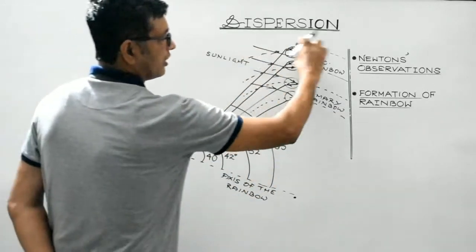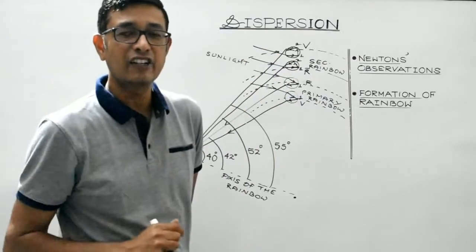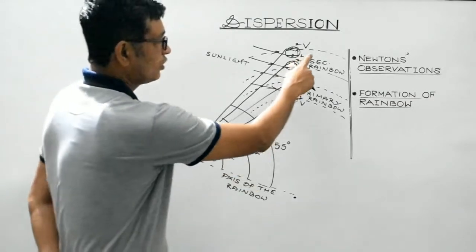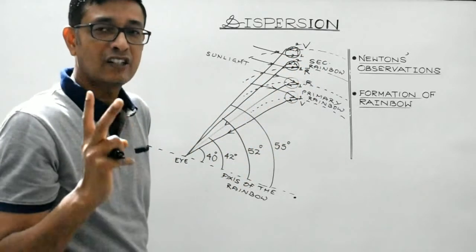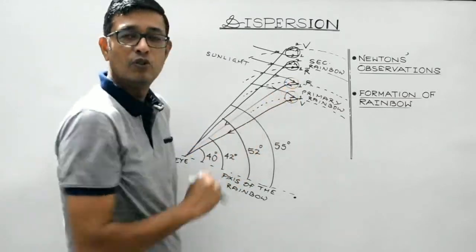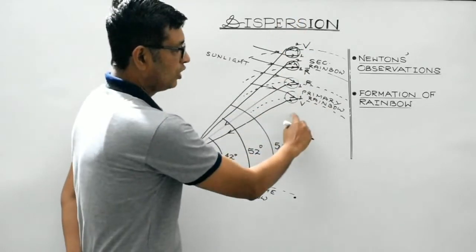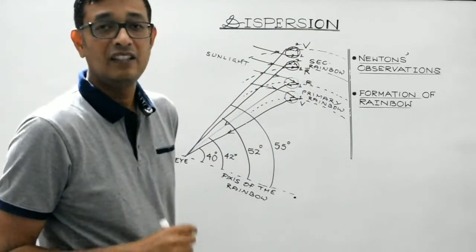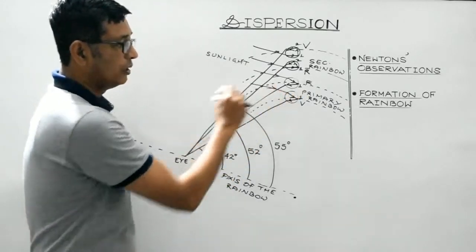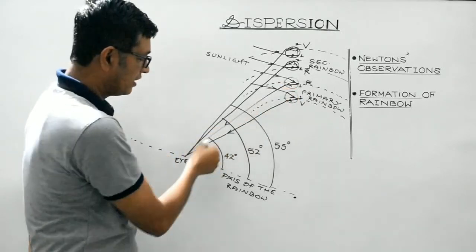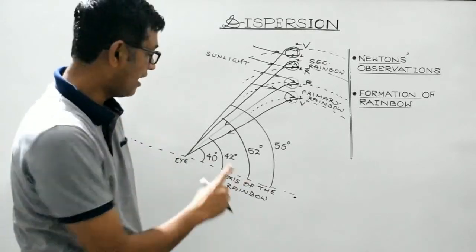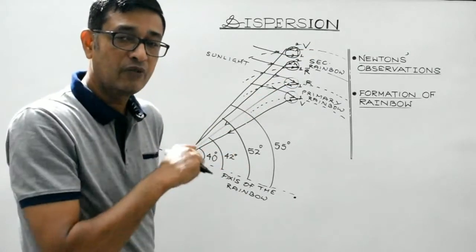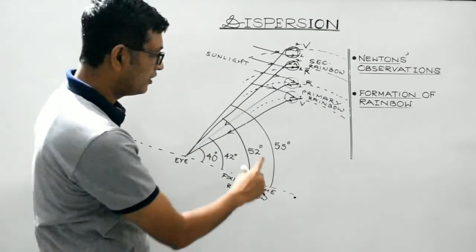The basic differences between primary and secondary rainbow are: in primary rainbow only one total internal reflection takes place, while in secondary rainbow two total internal reflections take place. In primary rainbow the inner colour is violet and the outer edge is red, while in secondary rainbow the inner colour is red and the outer is violet. For an observer to view the primary rainbow, the angle with the axis is 41 degrees; for secondary rainbow it is 53.5 degrees — average of 52 and 55 degrees.